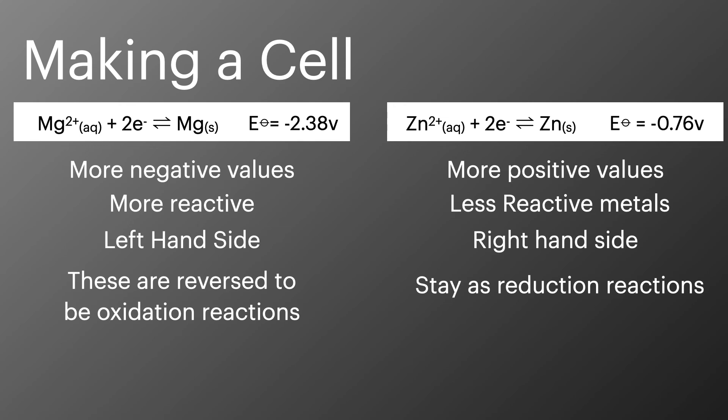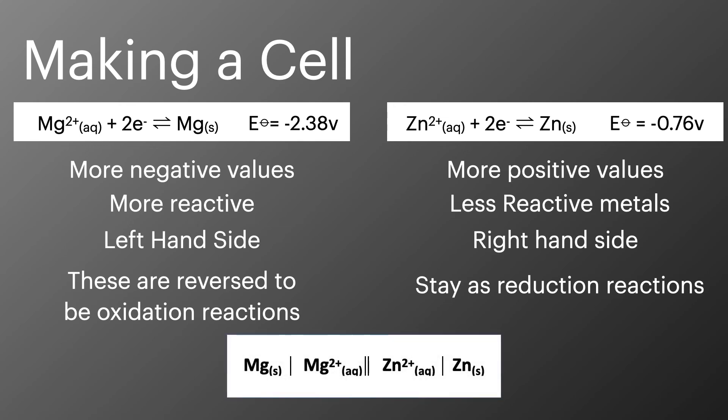When we combine these together then and draw them out as the full electrochemical cell, it will look like this. The magnesium solid turning into the magnesium ions on the left-hand side of the cell, and then zinc ions turning into zinc atoms on the right-hand side of the cell.